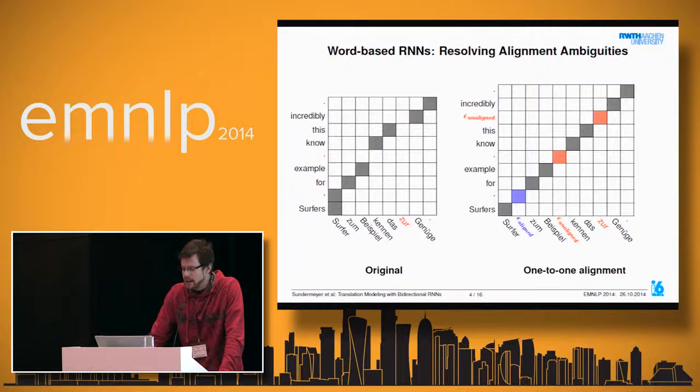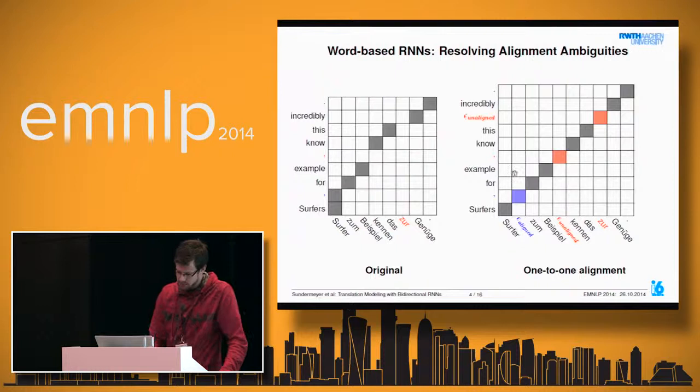The first step is to artificially create a monotone one-to-one alignment. We make the alignment monotone by following the order of the target words and reordering the source sentence accordingly. In this example, no reordering is actually necessary.